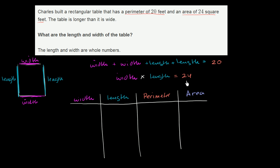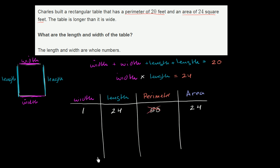So let's think about the factors of 24. It could be 1 and 24. So a width of 1 and a length of 24 — since the table is longer than it is wide, we want the larger number under length. 1 times 24 is 24. But what is 1 plus 1 plus 24 plus 24? That's going to be 2 plus 48, which is 50. So this doesn't meet our condition that the perimeter is 20. This one does not work out.